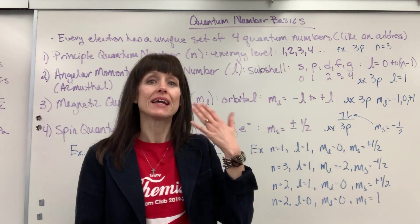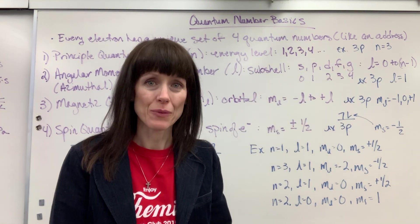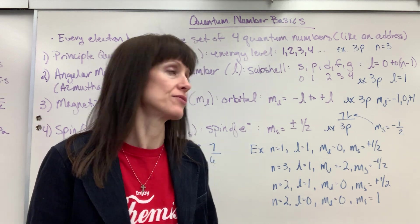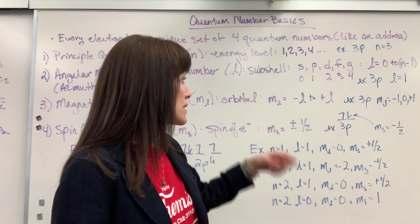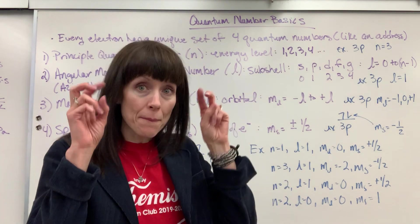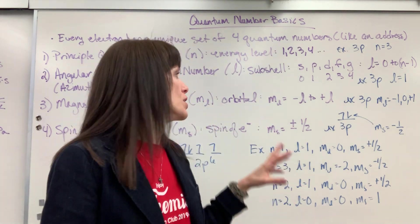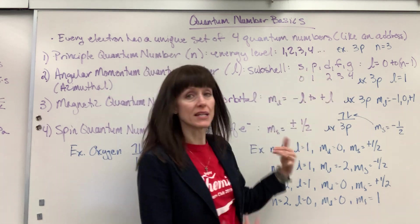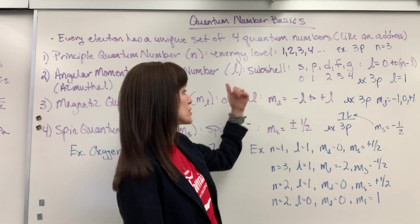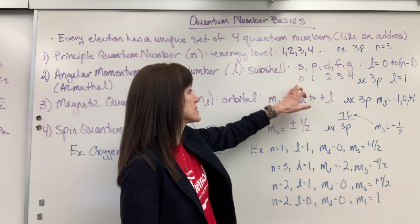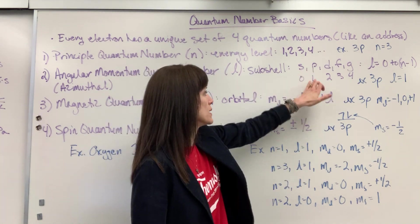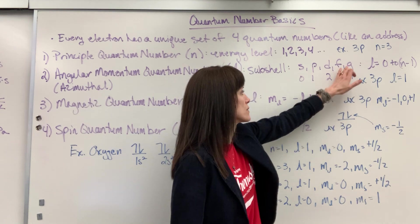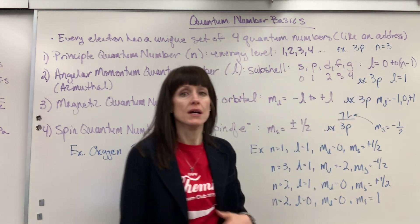We assign numbers to these subshells. To make it easy, instead of writing those letters, we give them a number starting with zero. S is zero, P is one, D is two, F is three, G is four, etc.